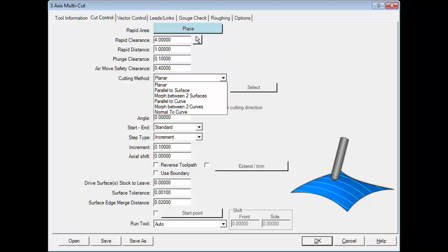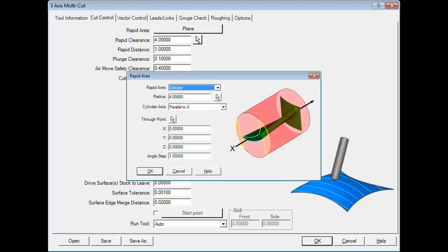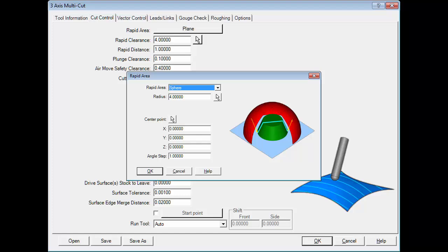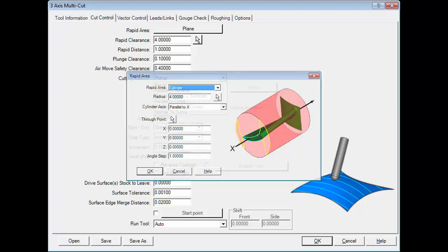Production times are reduced by selecting one of the multiple types of rapid areas, including plane, sphere, or even cylinder.